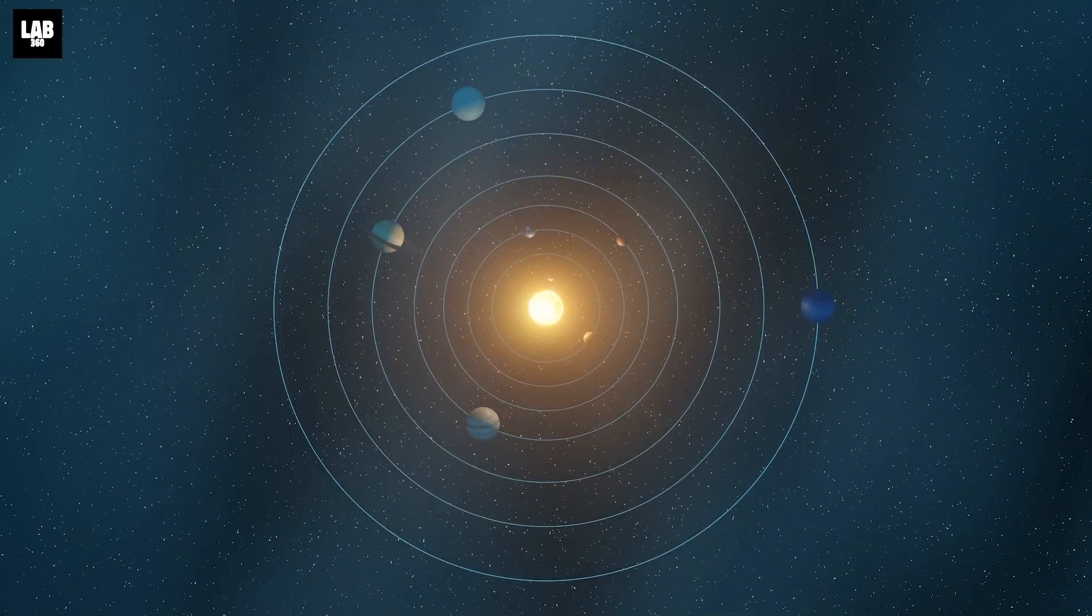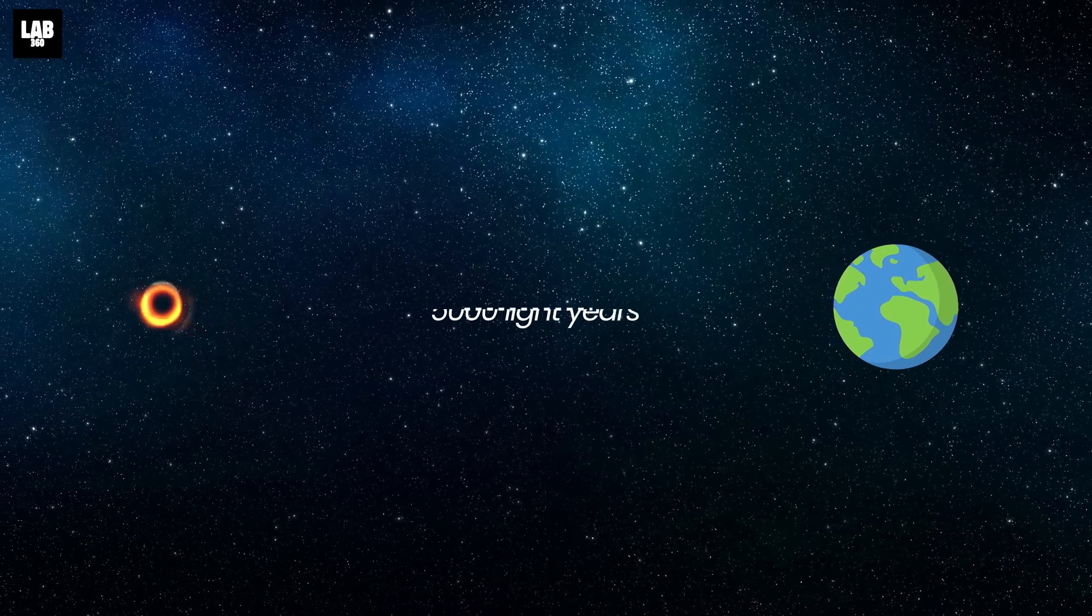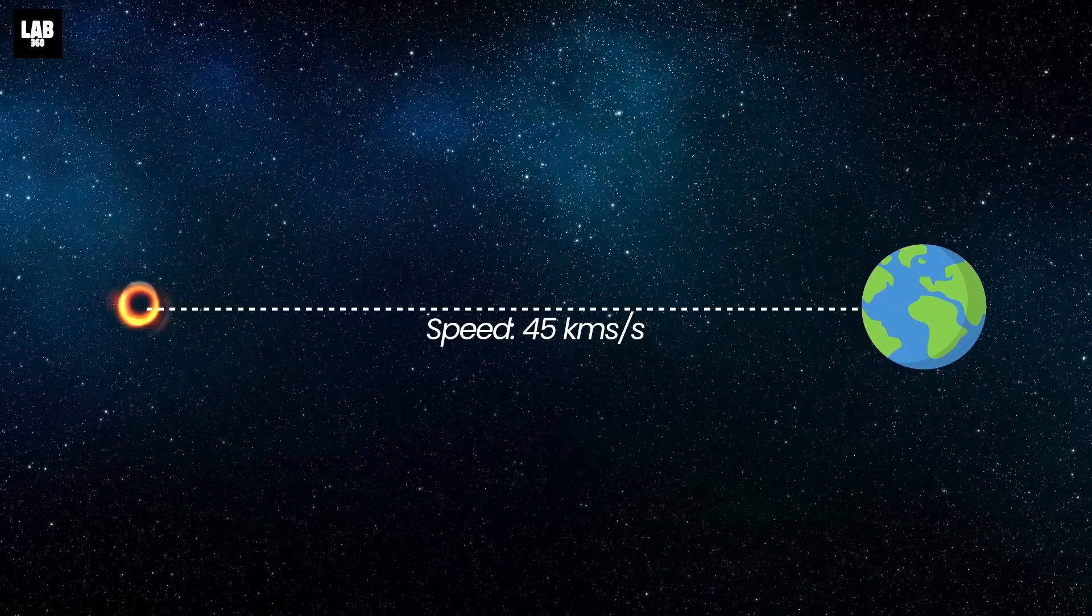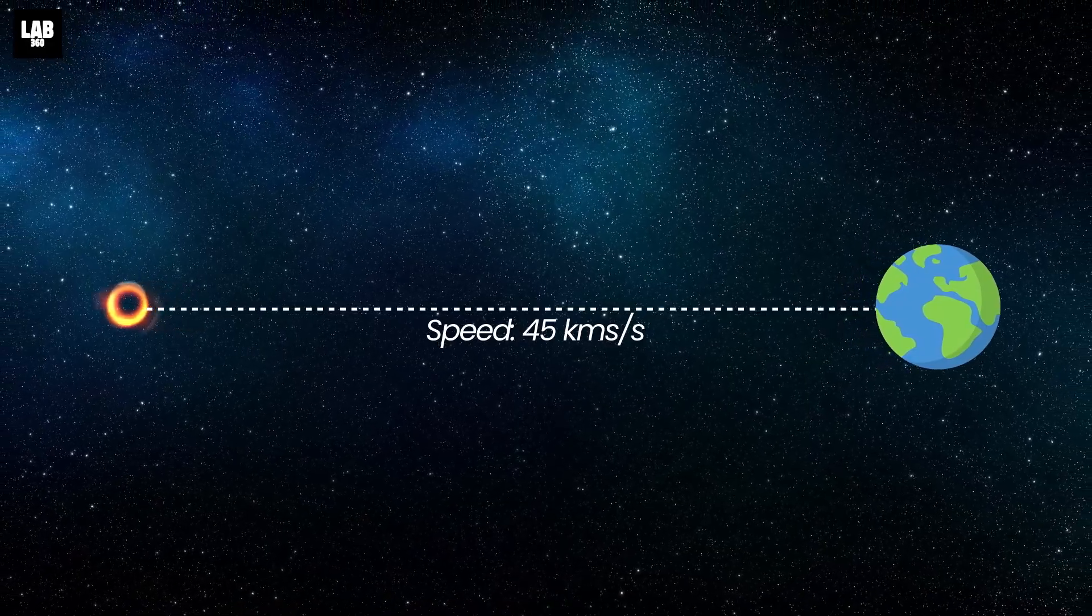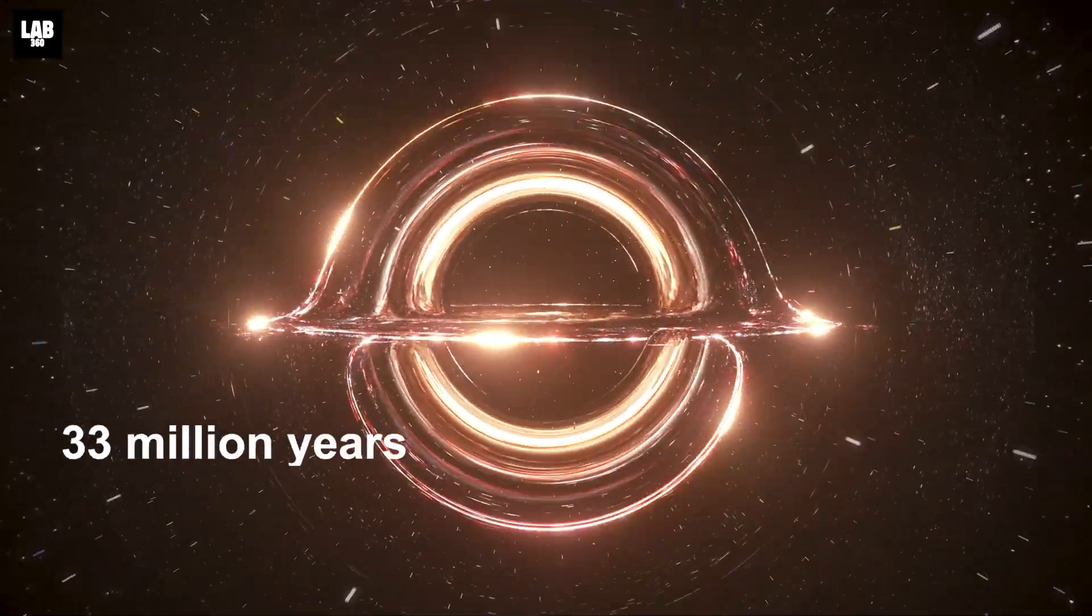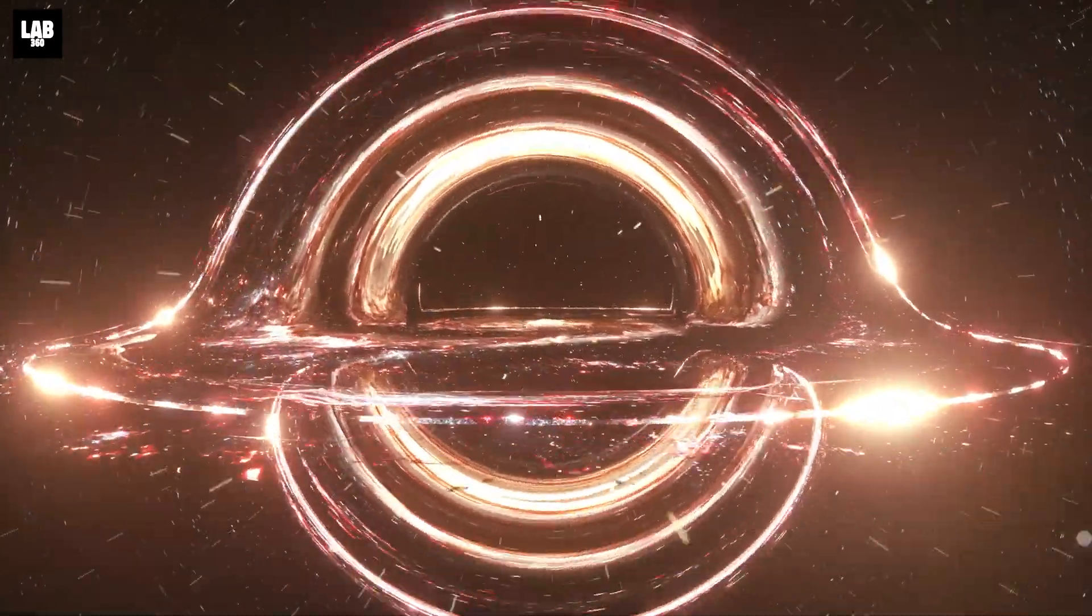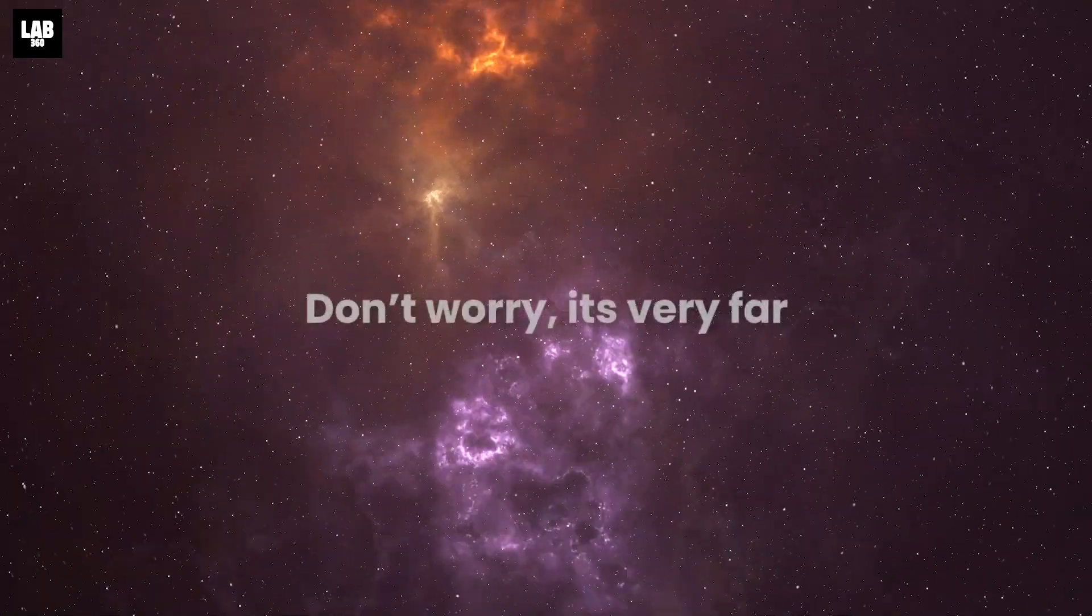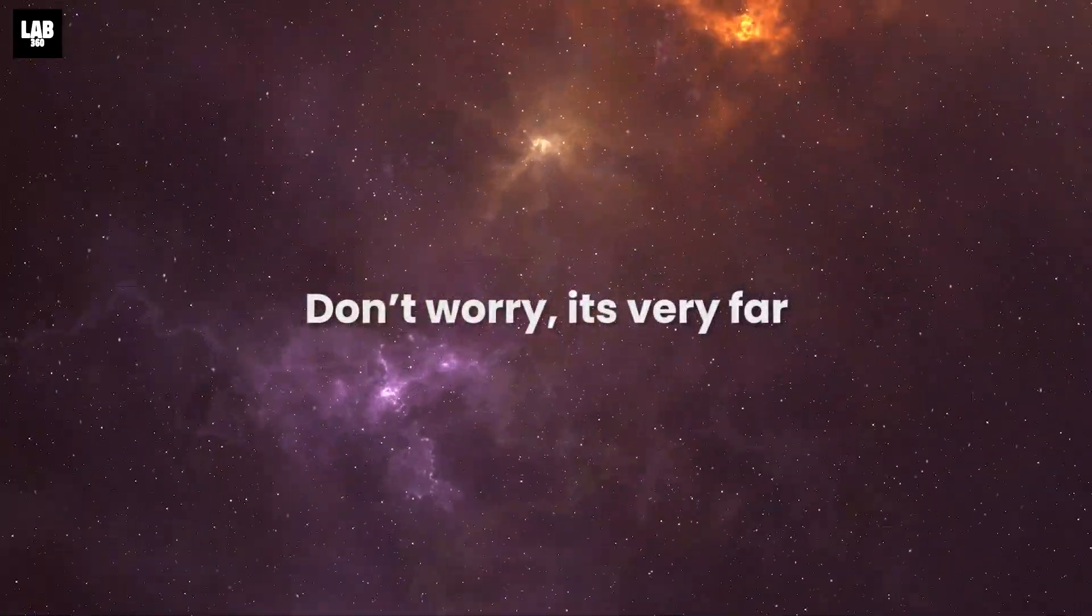But what does this mean for our solar system? This runaway black hole is 5,000 light years away from us and is traveling at a speed of 45 kilometers per second. It would take the black hole around 33 million years to reach Earth. Now, that's a long time. So, you don't need to worry about it reaching us any time soon.